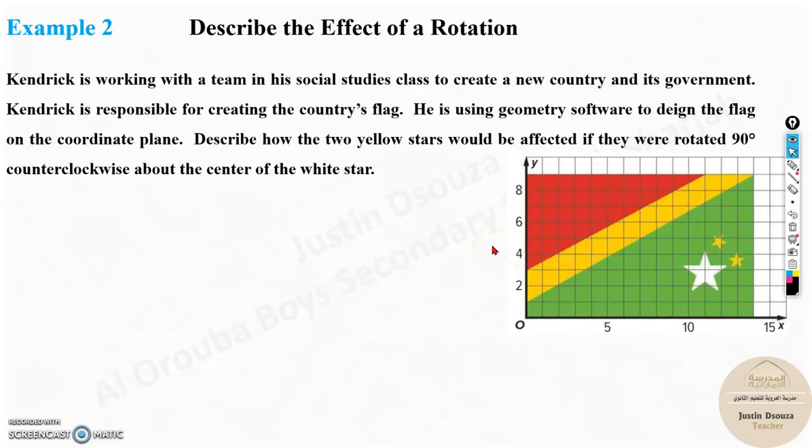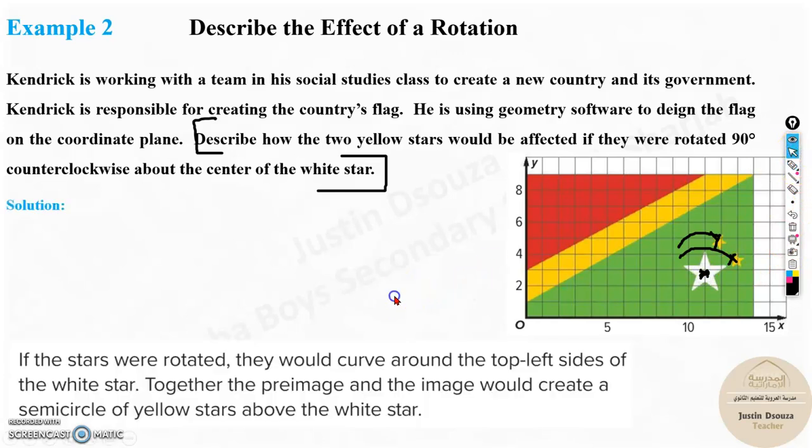Now there's one more problem here. Kendrick is working with a team in his social studies class to create a new country and its government. Kendrick is responsible for creating the country's flag. He is using geometry software to design the flag on the coordinate plane. Describe how the two yellow stars would be affected if they were rotated 90 degrees counterclockwise about the center of the white star. Now this is very important. You know everything, but the most important thing starts over here.